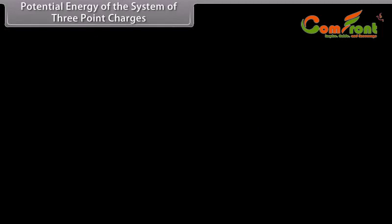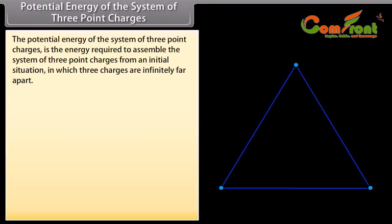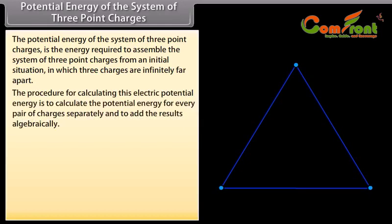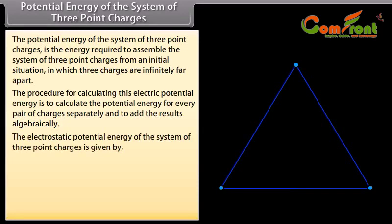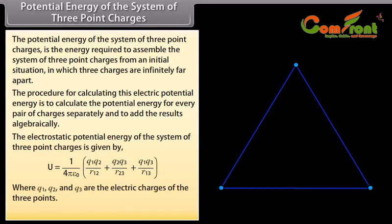Potential energy of the system of three point charges. The potential energy of the system of three point charges is the energy required to assemble the system from an initial situation in which the three charges are infinitely far apart. The procedure is to calculate the potential energy for every pair of charges separately and add the results algebraically. The electrostatic potential energy is given by U equals 1 upon 4π ε₀ multiplied by (Q1Q2 upon R12 plus Q2Q3 upon R23 plus Q1Q3 upon R13), where Q1, Q2, Q3 are the charges and R12, R13, R23 are their separation distances.